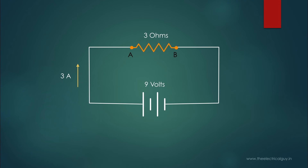To understand these terms more clearly, let's do one more experiment. Here I have a battery of 9V and a resistance of 3 ohms. I have connected this resistance with the battery using connecting wires, and the current flowing through this circuit is 3A — which we can calculate using Ohm's law.